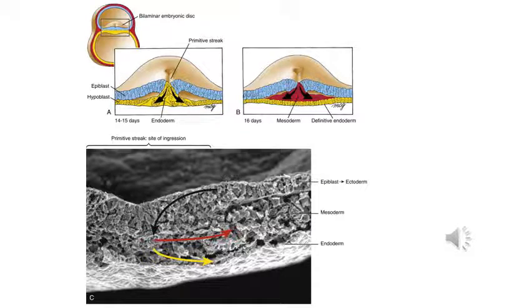The second thing that is really important in the third week of development is the process of gastrulation. Gastrulation is the process where the implanted blastula forms three germ layers. The bilaminar disc turns into a trilaminar disc with three separate germ layers. The three layers are the ectoderm, the mesoderm, and the endoderm.